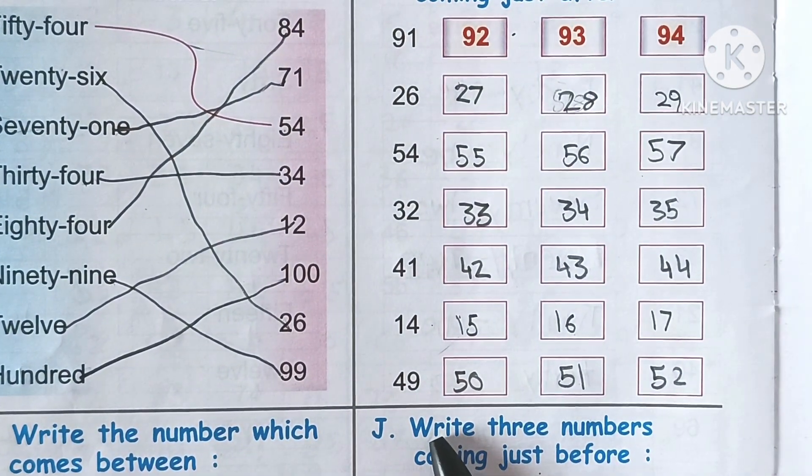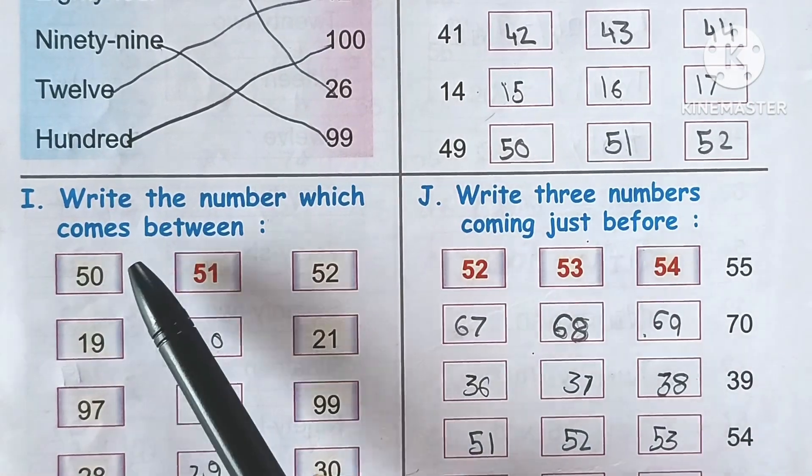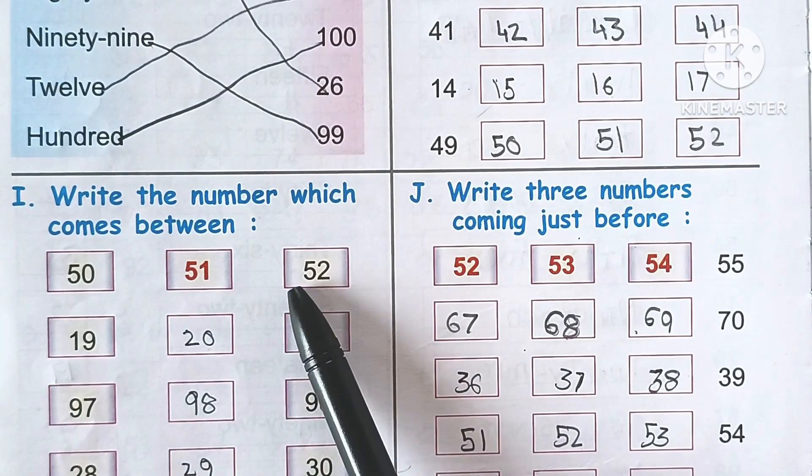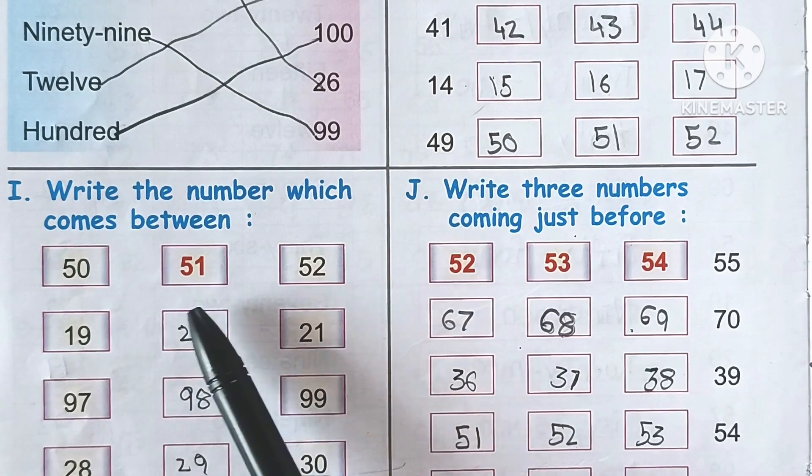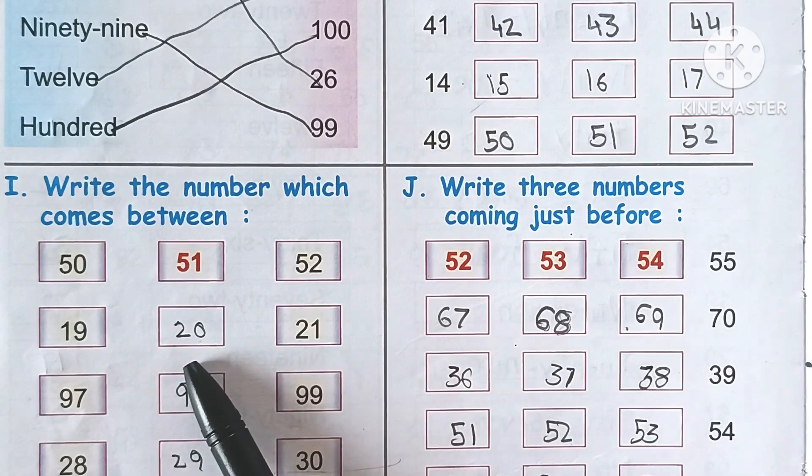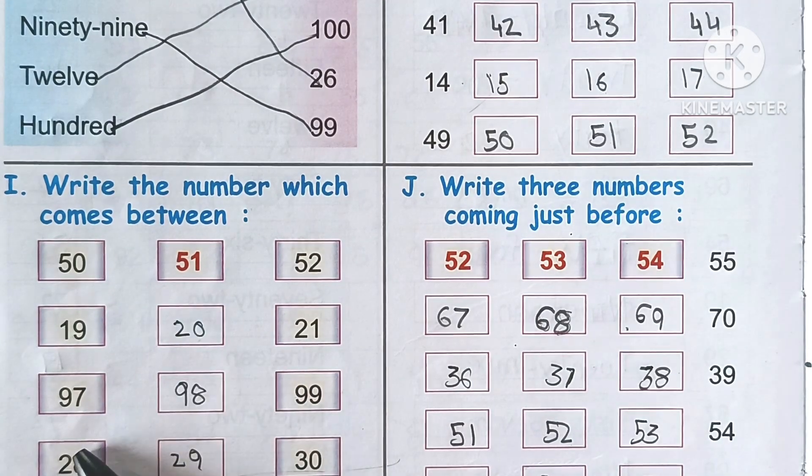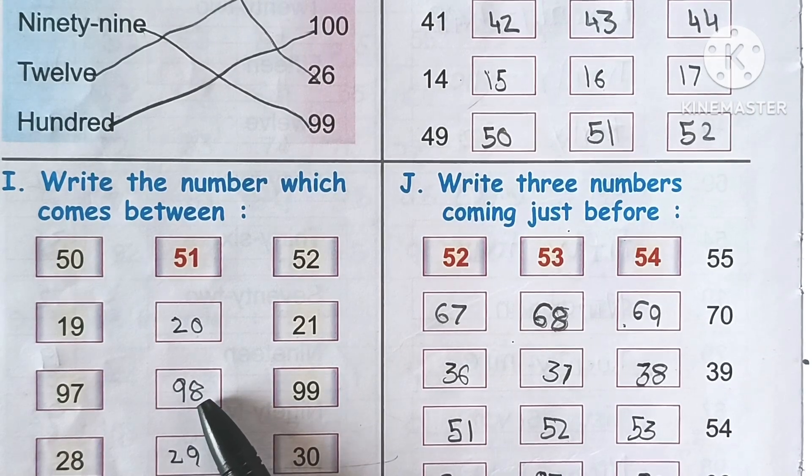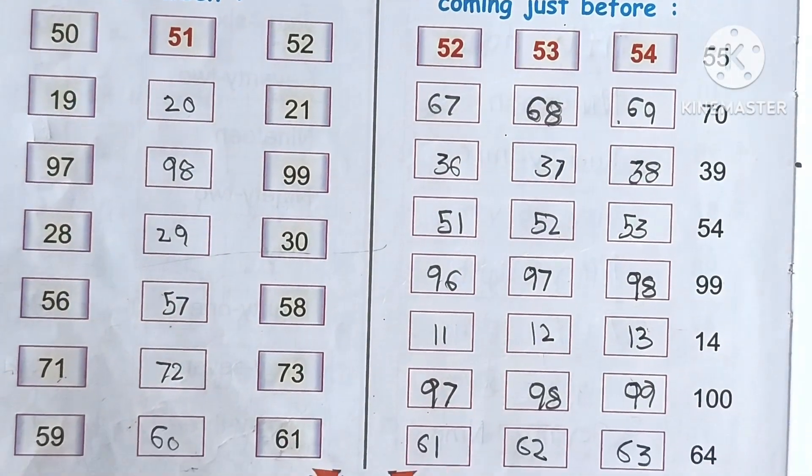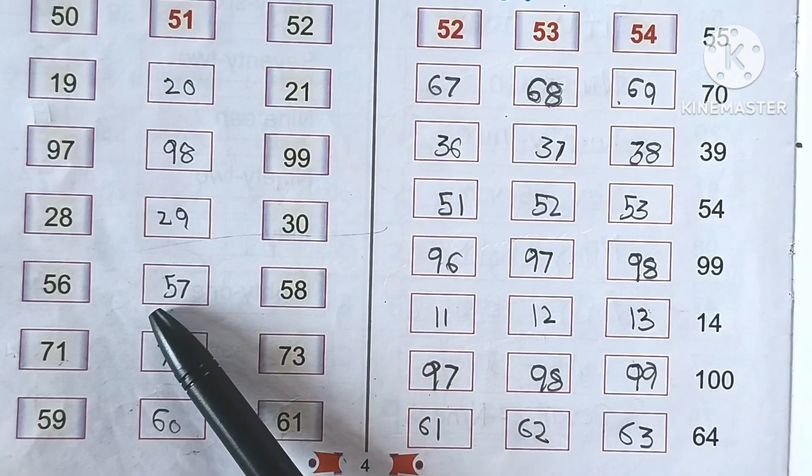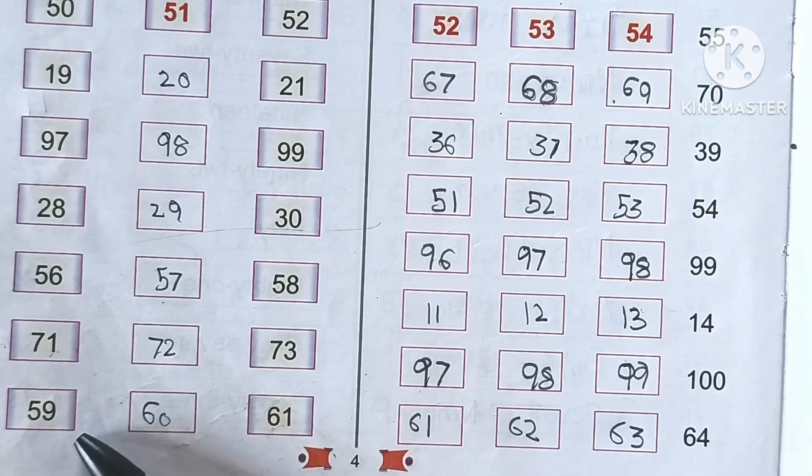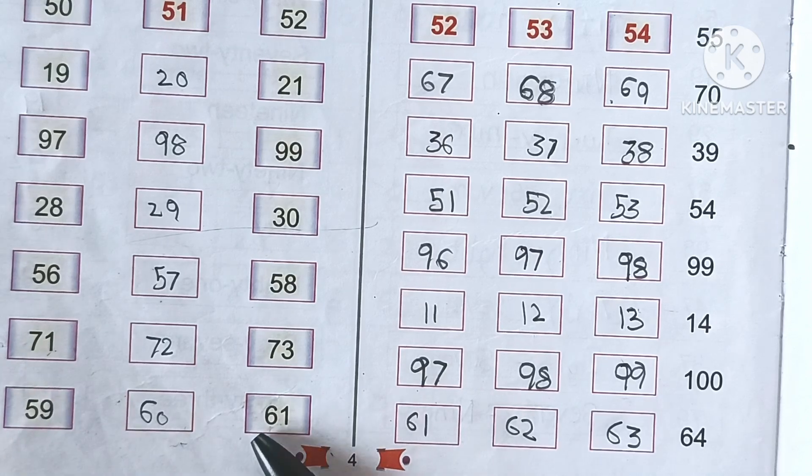Now see the next question: write the number which comes between. Between 50 and 52 is 51. Between 19 and 21 is 20. Between 97 and 99 is 98. Between 28 and 30 is 29. Between 56 and 58 is 57. Between 71 and 73 is 72. Between 59 and 61 is 60.